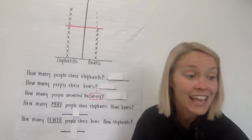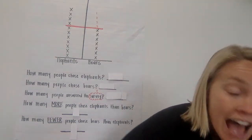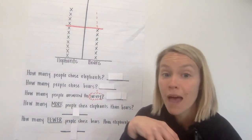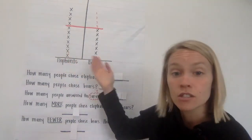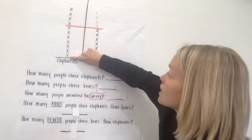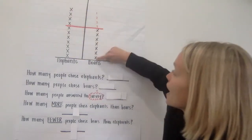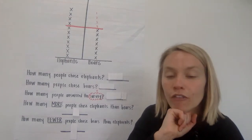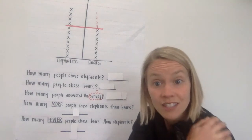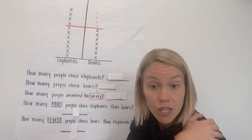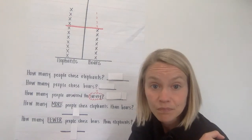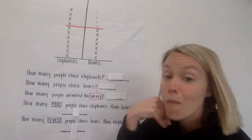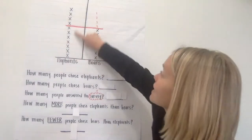So there was a friend named Sam, and he asked his friends which animal they like better — elephants or bears. Here is what his friends said — here were their answers. I want you to look at this graph and think about which animal his friends liked. Looking at this graph, it looks like more of his friends like elephants than bears.